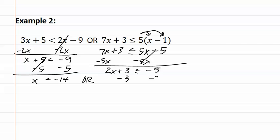We then subtract three from both sides and we get 2x is less than or equal to negative eight. Dividing both sides by two, we get x is less than or equal to negative four.